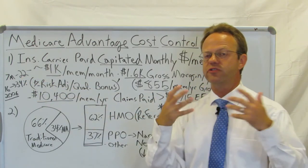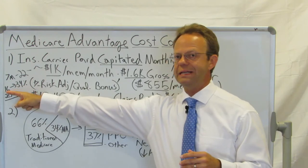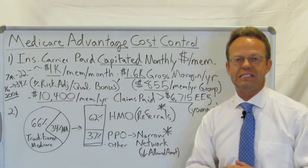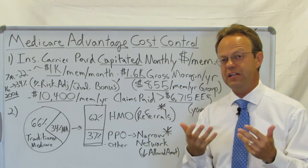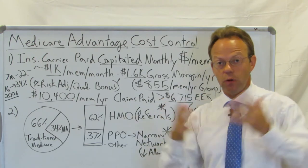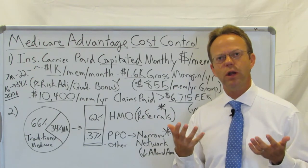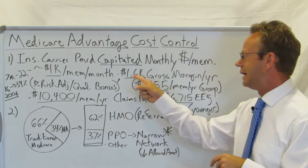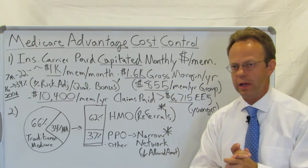As a percentage of Medicare beneficiaries, it's gone from 16% to 34%, essentially doubling on a percentage basis. It's growing, and it's understandable why commercial insurers would want to get into this business more and more because their margins are like twice as high on it.